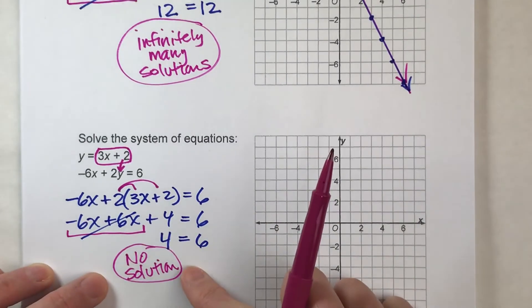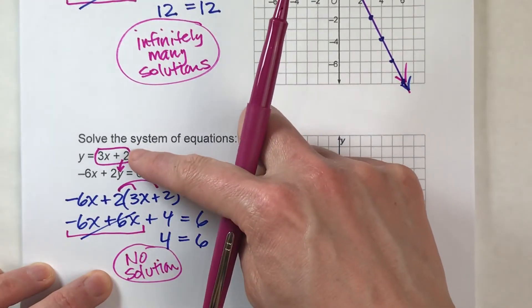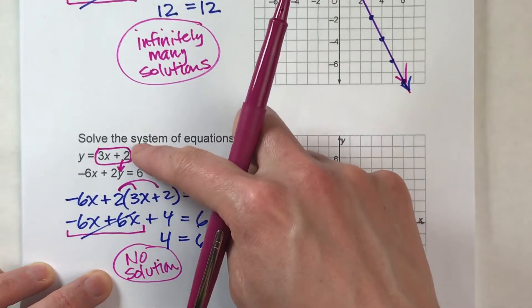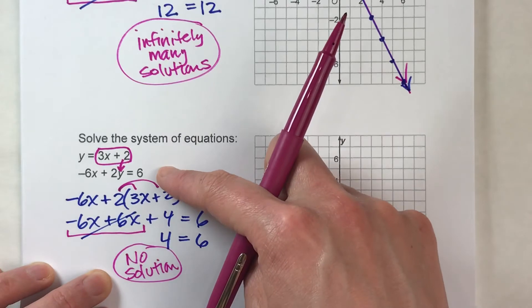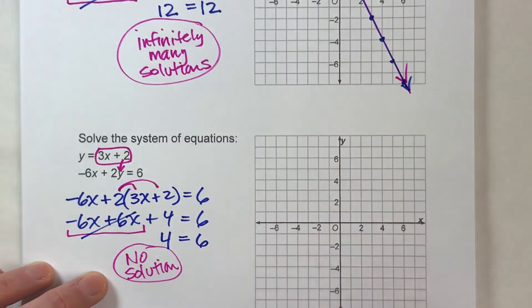In other words, there is no combination of x and y that will work for both equations. There might be a combination that works for the first equation, there might be a combination that works for the second equation, but there is no combination that will work for both.